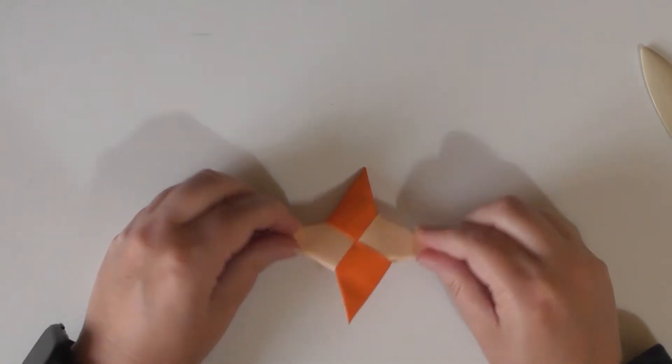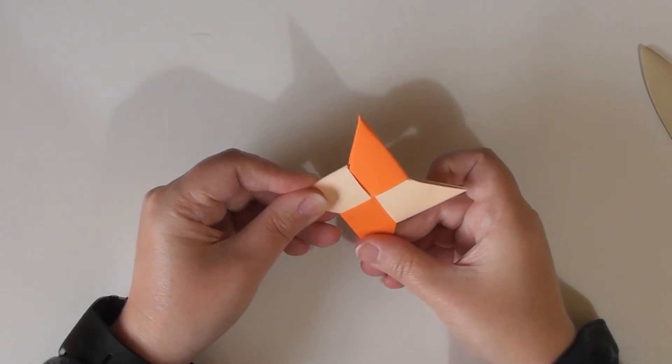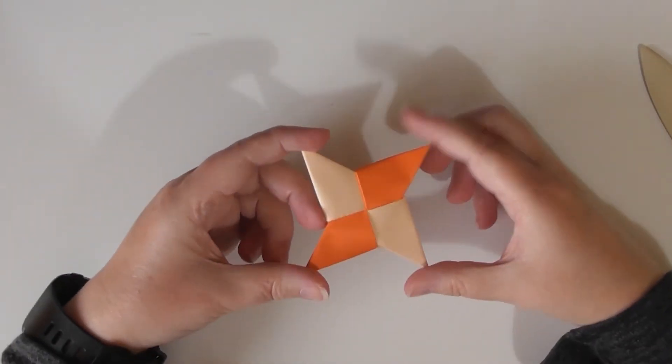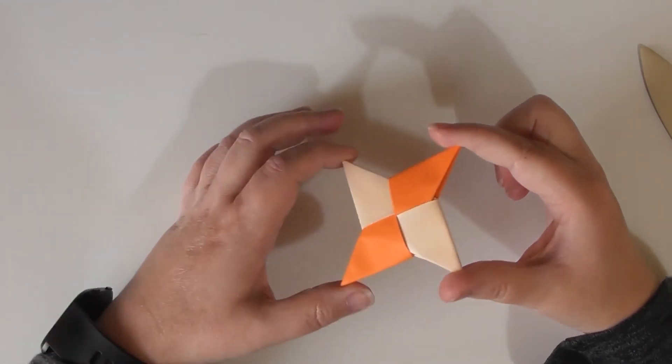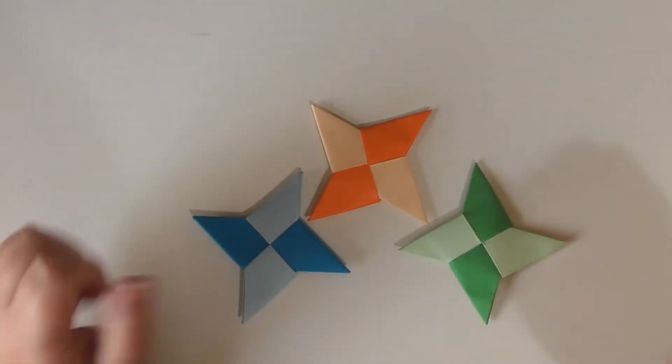And then it's done. There we go. So it's pretty firm once it's in there, it doesn't want to go anywhere because it is such a snug fit but that is all it takes to make a ninja star. And you do them in all sorts of colors and you can have really good fun with them.